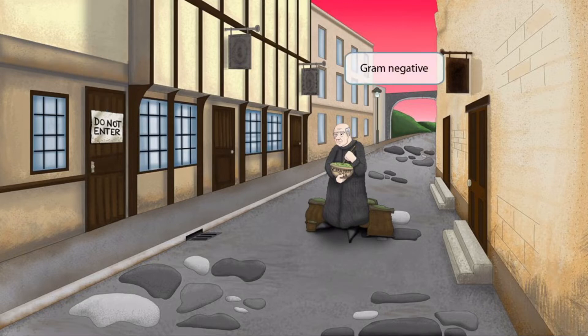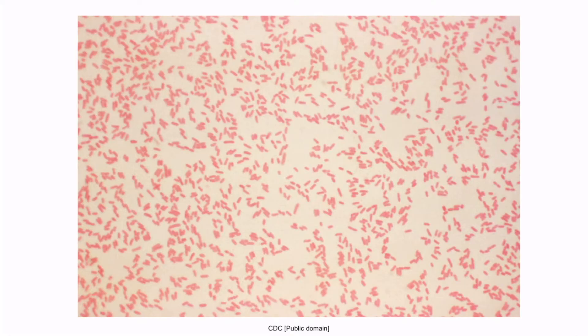Before we go any further, pay attention to the background. We've intentionally included a pink sunset, which is to help you remember that both of these organisms are gram negative. This is a gram stain of Yersinia enterocolitica; however, Yersinia pestis would have a very similar morphology under the microscope. Notice that the organisms are pink and rod shaped, hence the gram negative bacilli classification.